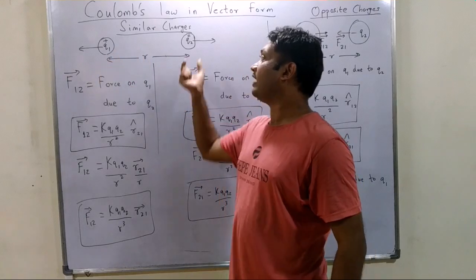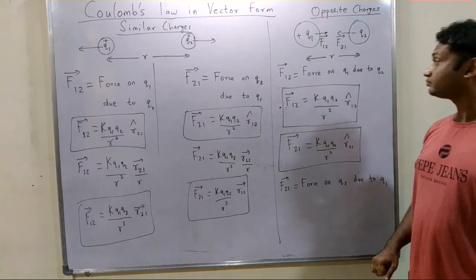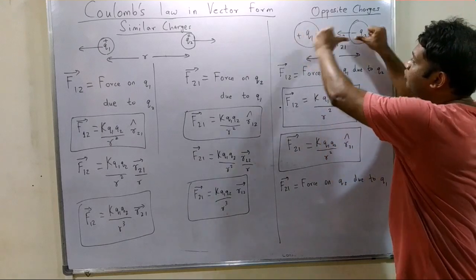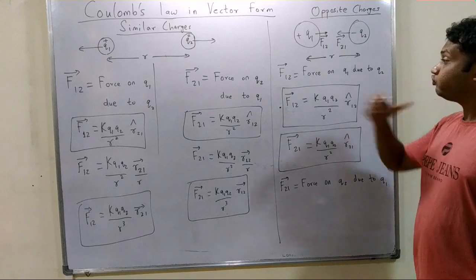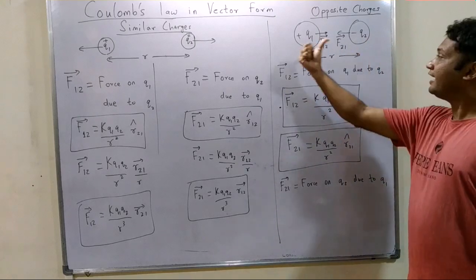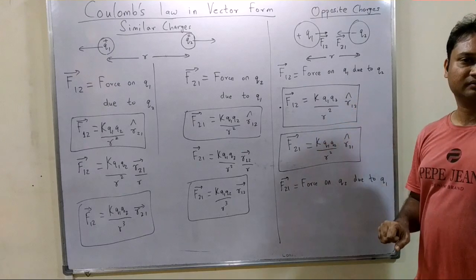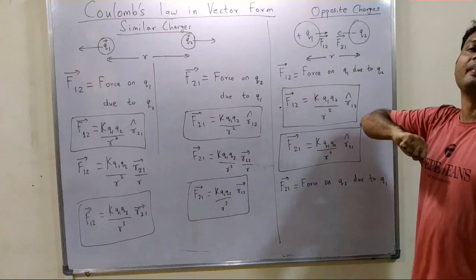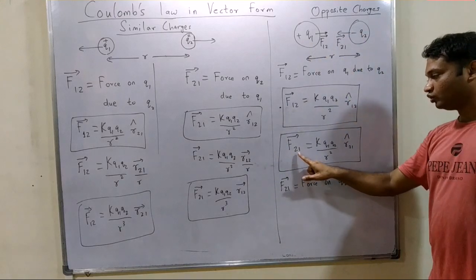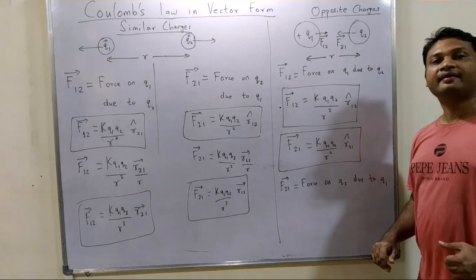What if one charge is positive and another is negative? In this case, both charges attract each other. The direction of force on q1 due to q2 reverses — it is now in the 1-to-2 direction (rightward). So F₁₂ = k·q1·q2 / r² × r̂₁₂. This is Coulomb's law in vector form for the attractive case.